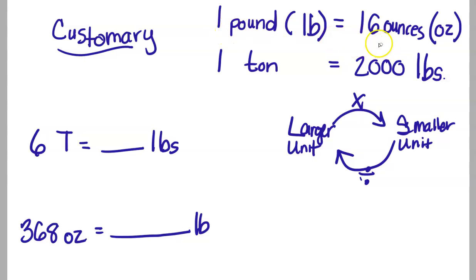So one pound is equal to 16 ounces, or OZ is the abbreviation for that. Then the other measurement we have is for large weights. One ton is equal to 2,000 pounds. So when we are converting from a larger unit to a smaller, we're going to use multiplication, and from a smaller unit to a larger, we're going to divide.